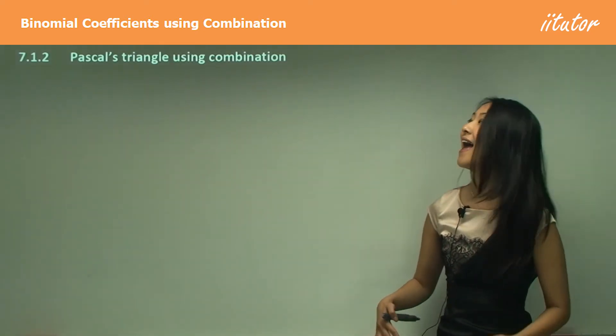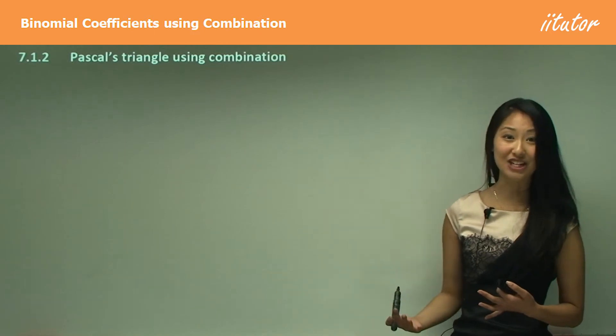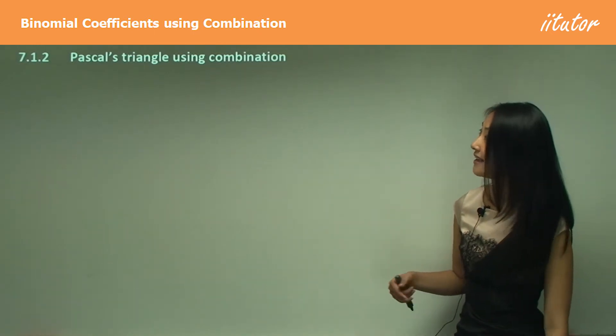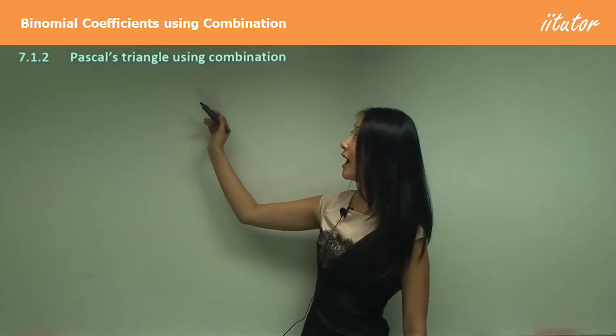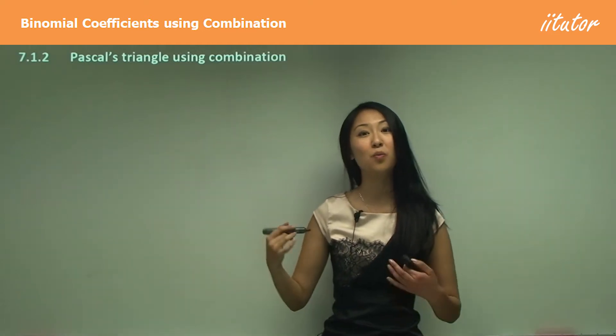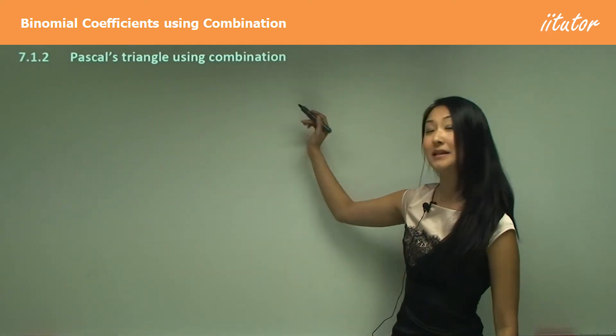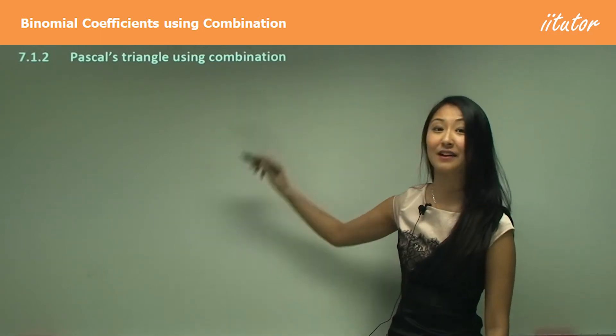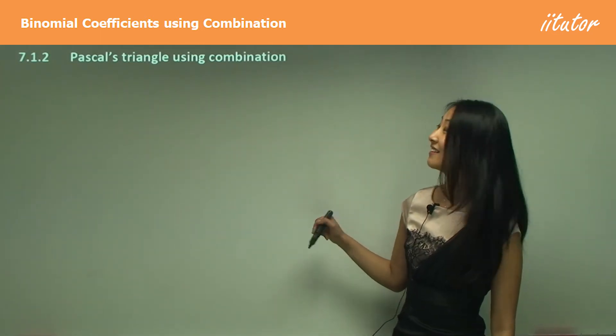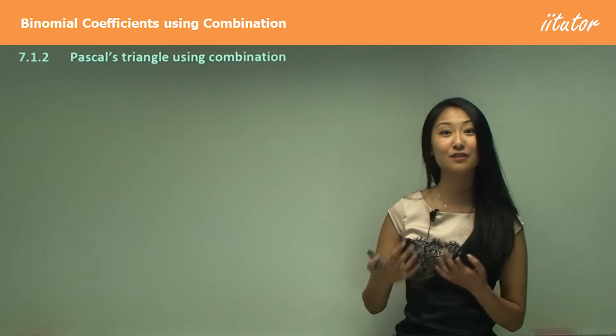So what I want to do here is overcome that limitation, and how we do that is by having Pascal's triangles but using combinations to work out the numbers within the triangle rather than writing them all out. So let's learn how we're going to use combination to find these numbers.